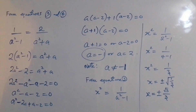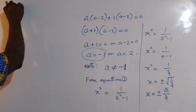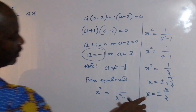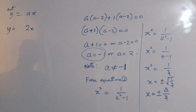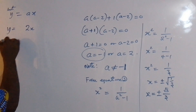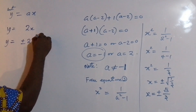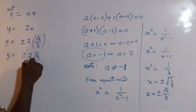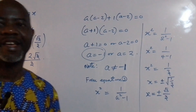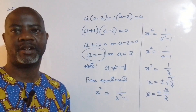Since y equals ax and a is 2, y equals 2x. So y equals plus or minus 2 times root 3 over 3, which gives y equals plus or minus 2 root 3 over 3. So guys, there you have it. I will see you in the next video where we will look at the other method of solving this problem. Thank you.